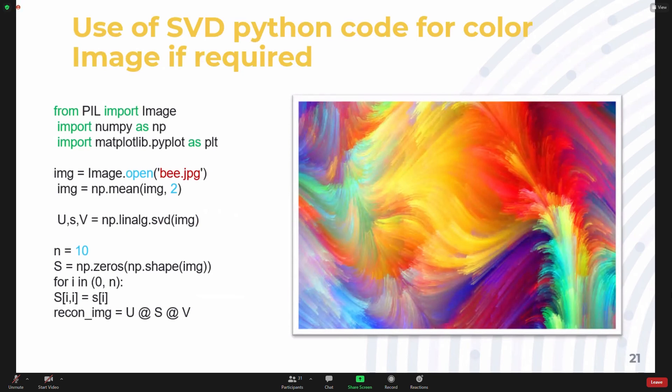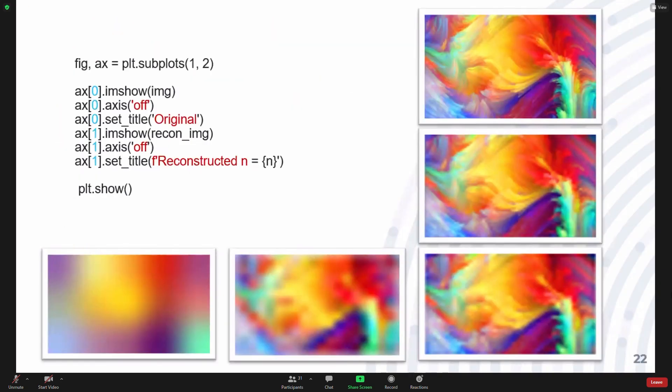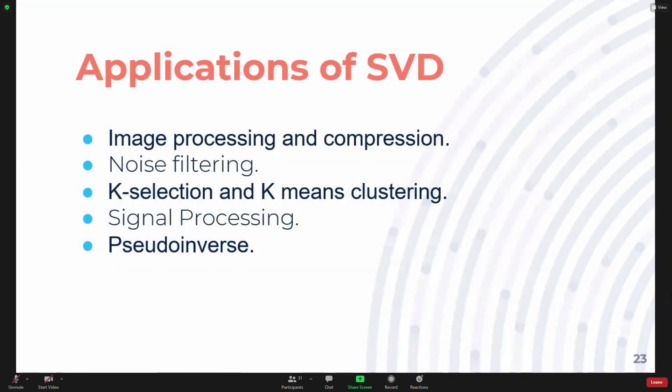And this is the Python code that is used for converting and compressing a color image. After that, we have compressed it at different levels. SVD is also used in different concepts such as noise filtering, case selection and image clustering, signal processing, and pseudo-inverse.